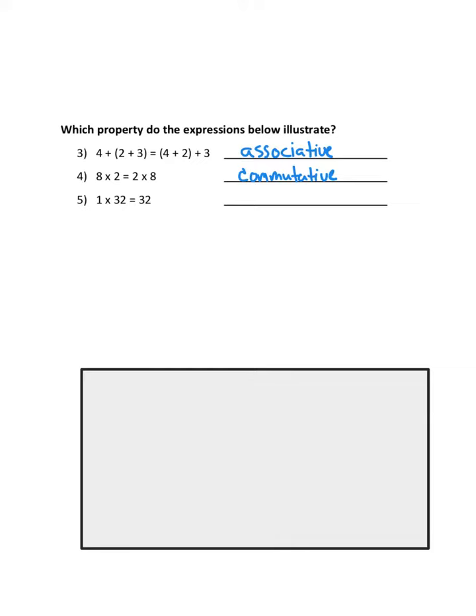And then the last one, here's what you'll see: 1 × 32 = 32. That would be the identity property. The identity property says any number times one keeps its identity.